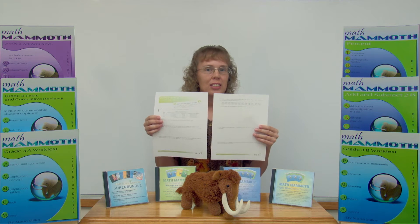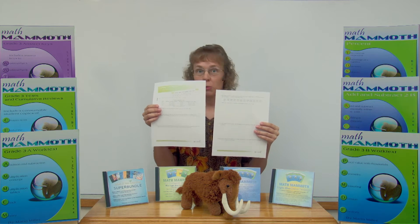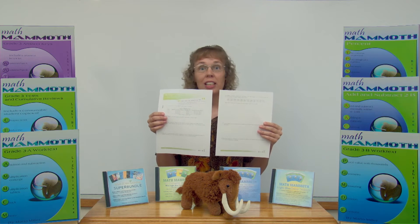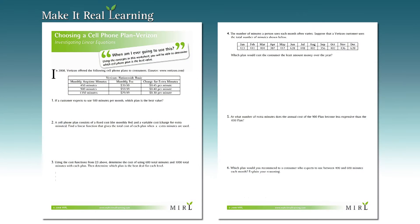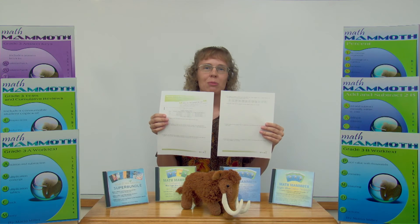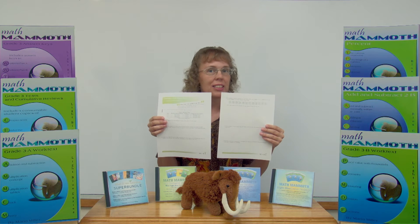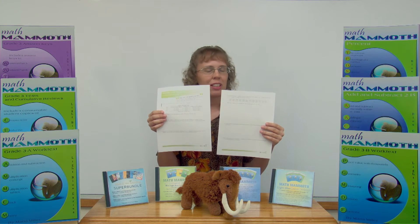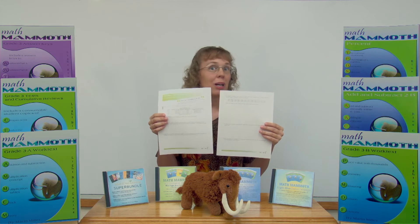Here's an activity lesson plan with a two-page worksheet about choosing a cell phone plan. It uses real life data from a real company and then has several questions for students to ponder. Notice it does not contain instruction on linear equations or linear functions — instead, students must have the instruction before using this activity. This particular one matches about Algebra 1 level.